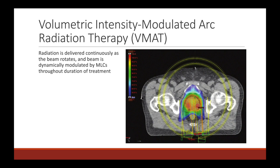Volumetric Modulated Arc Radiation Therapy, or VMAT, is a type of IMRT where the head of the machine moves in a continuous arc around the patient. While it's moving, it's delivering radiation the whole time, and those MLC leaves are dynamically moving in and out the whole time to conformally shape the radiation dose and create a dose distribution that's highly conformal to the target area. Nowadays, we largely use VMAT to treat things in the pelvis and head and neck cancers, and it has really transformed how we're delivering radiation.